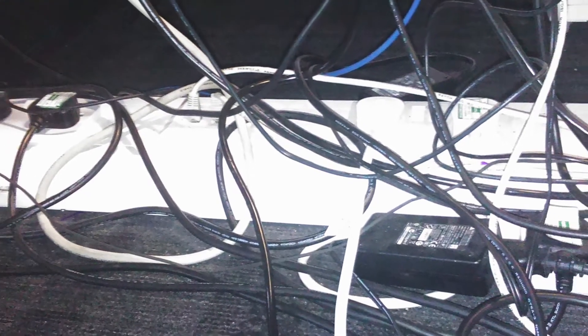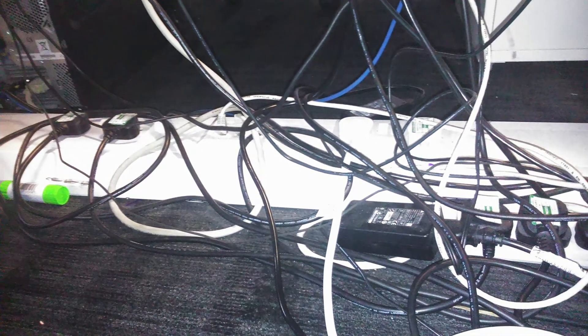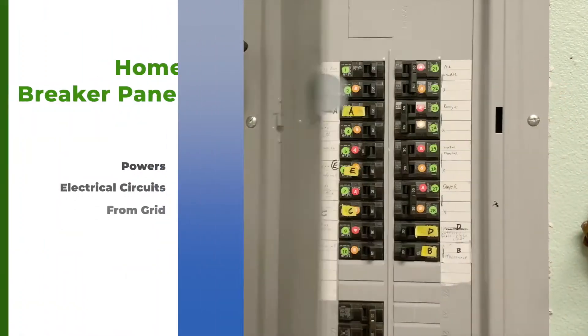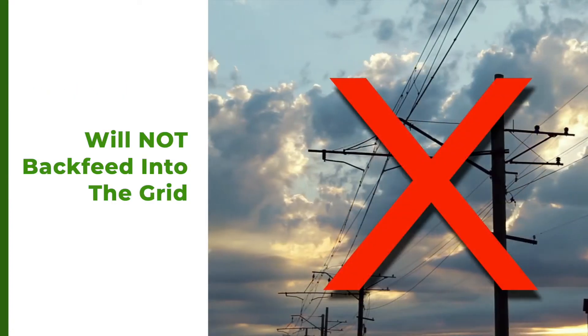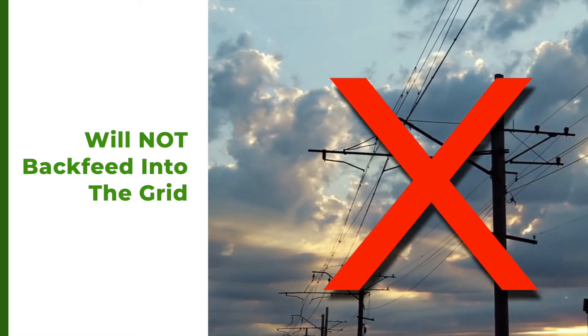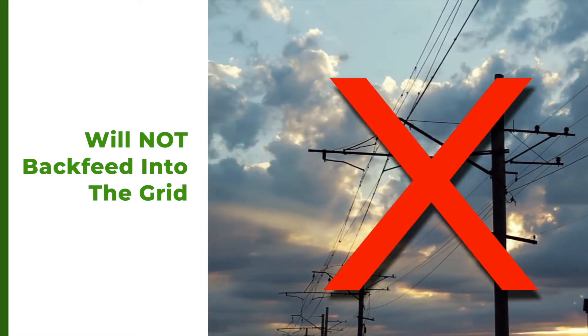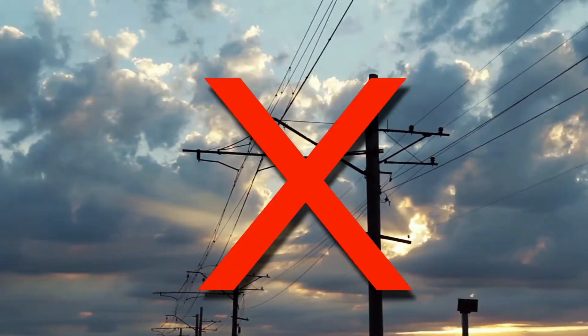I certainly don't want to run extension cords all over the house to power things. What I'd like to be able to do is just tie into my home breaker panel. It already has all the circuits in it that I want to get to, but I need to do it in a way that's safe and legal and that won't back-feed into the grid, which is illegal and dangerous for the linemen who have to work during power outages.